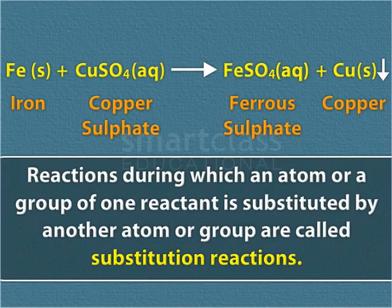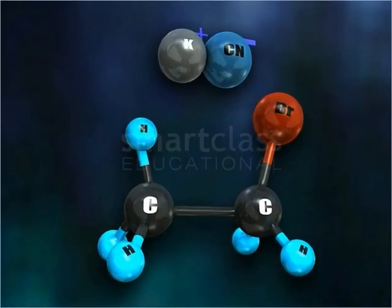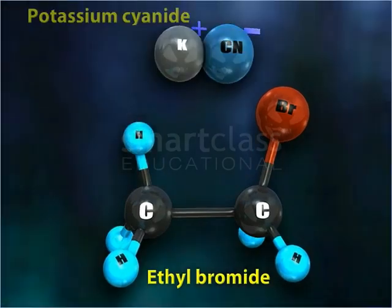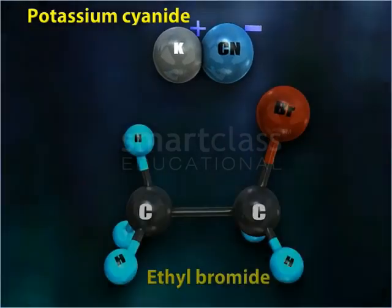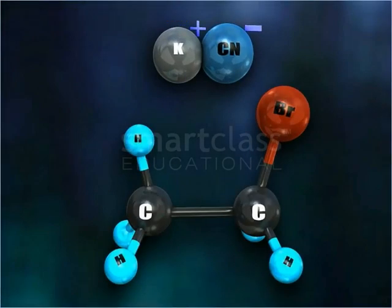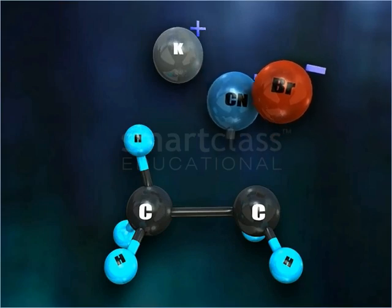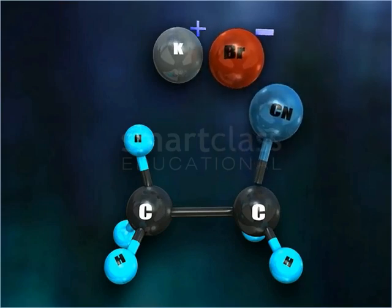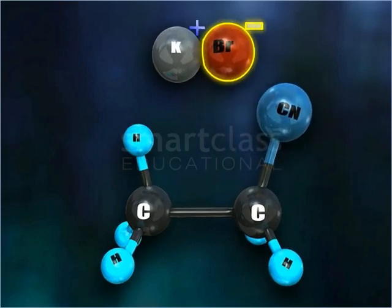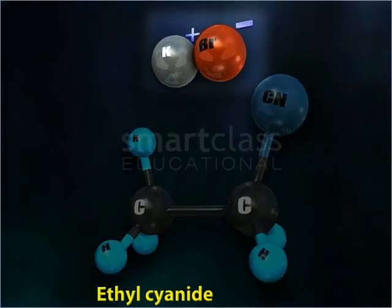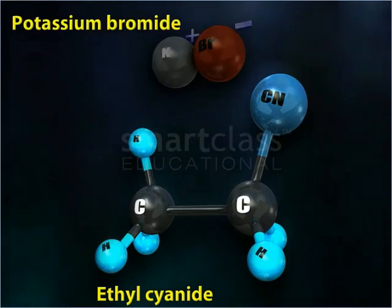A substitution reaction takes place between ethyl bromide and potassium cyanide. During the reaction, the cyanide group substitutes the bromo group of ethyl bromide to form ethyl cyanide and potassium bromide.